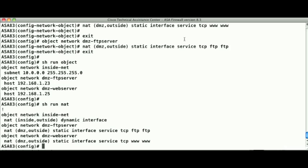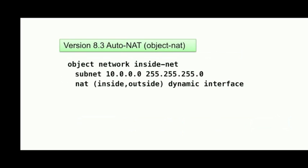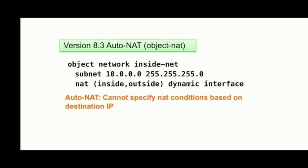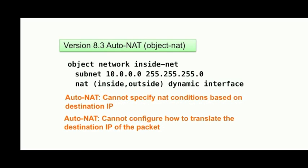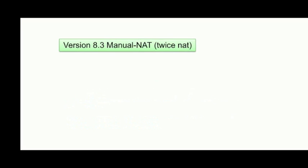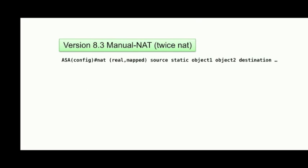So far, we've defined objects and specified how to translate their source IPs when they traverse certain interfaces of the ASA. However, when using Auto NAT, you can't specify that the ASA should only perform translation when a host accesses certain destinations, and you can't specify how the ASA might change the destination of the packet. To perform either of these configuration tasks, you need to use Manual NAT, also called Twice NAT. Manual NAT is not configured under an object's definition — instead, it's configured separately in the configuration and takes objects as arguments to specify the translation.